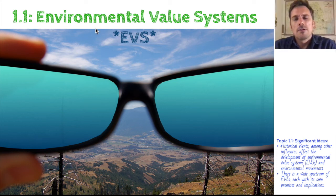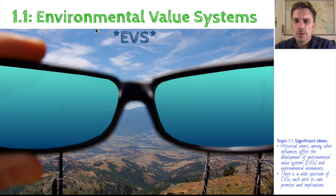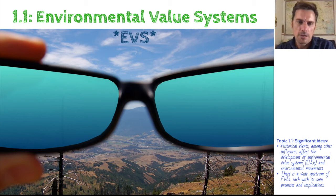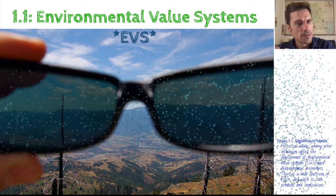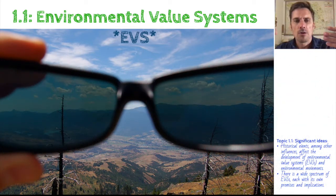Hi, and welcome to Environmental Systems in Society. This is the very first part of the course — topic 1.1 — and we dive in quickly with trying to see what an environmental value system is. That is simply put: here are the glasses, and if you pop off those lenses or put different color lenses in, you choose to see the world, the environment around you, with a different perspective.